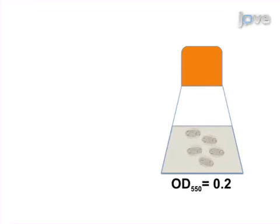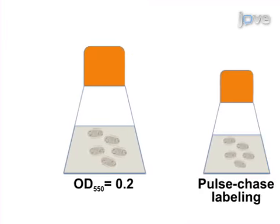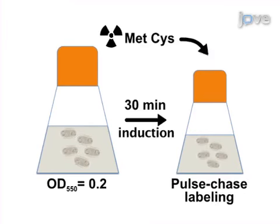This is achieved by first expressing a protein of interest in E. coli, incorporating the amino acid analog benzoyl phenylalanine into the protein at a specific location, and performing pulse-chase radiolabeling to tag a small population of synchronously synthesized protein molecules.